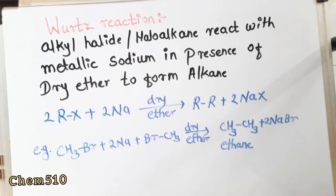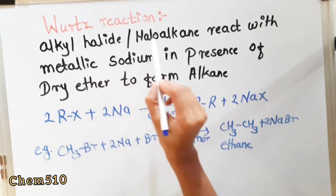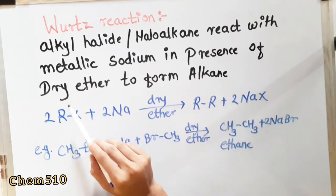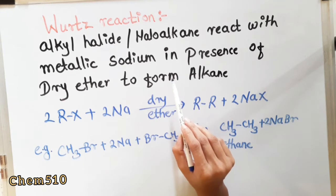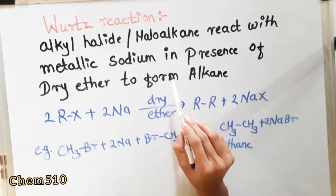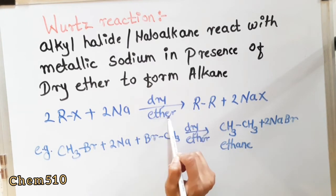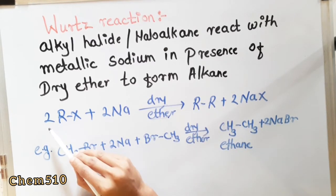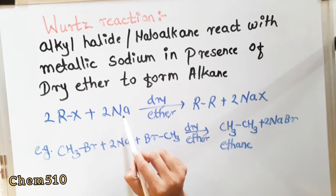The first name reaction is the Wurtz reaction. The statement is: alkyl halides can react with metallic sodium in the presence of dry ether to form alkanes. In the Wurtz reaction, two alkyl halides react with sodium metal — the catalyst is dry ether — and it forms an alkane. The general reaction is: 2RX + 2Na → RR + 2NaX, in the presence of dry ether.